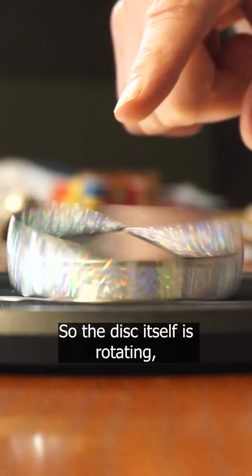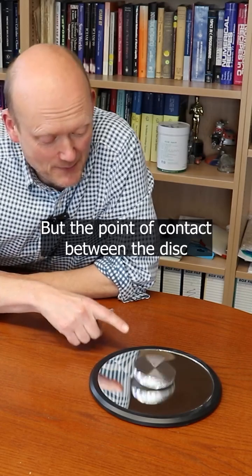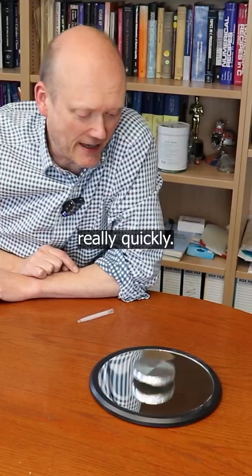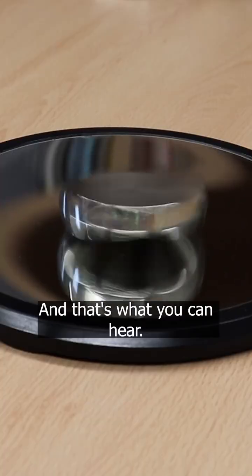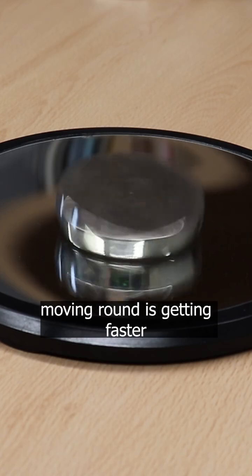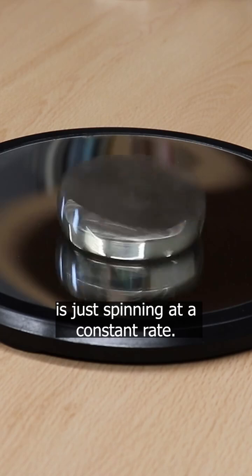So the disc itself is rotating but not very quickly, but the point of contact between the disc and the mirror is spinning really quickly and that's what you can hear. And that frequency of that point of contact moving around is getting faster and faster and faster, even though the disc itself is just spinning at a constant rate.